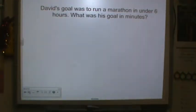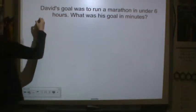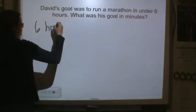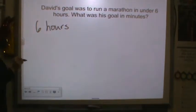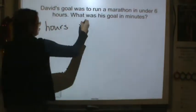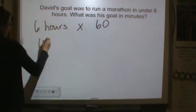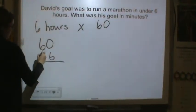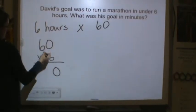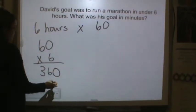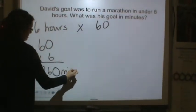David's goal was to run a marathon under 6 hours. What was his goal in minutes? Well we know that 6 hours, in order to convert hours to minutes you multiply by 60. So 60 times 6. 6 times 0 is 0, 6 times 6 is 36. So that's 360 minutes.